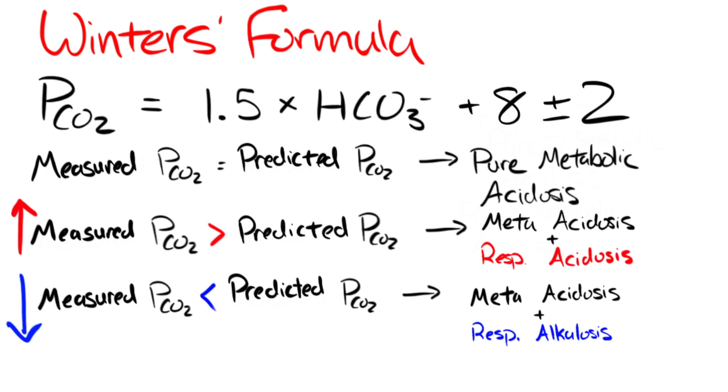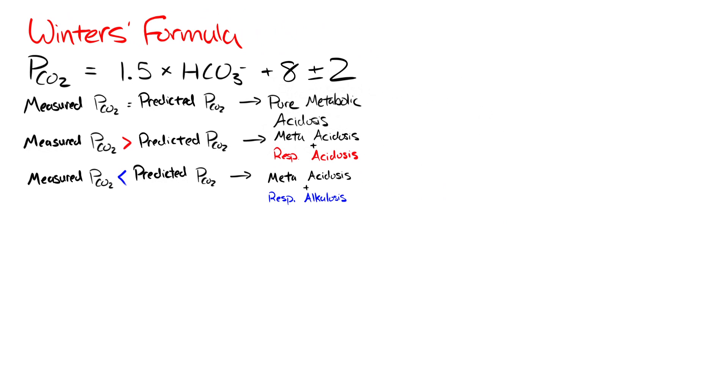A low PCO2 is consistent with a respiratory alkalosis. If you're getting rid of too much PCO2, which is acidic, you'll create an alkalotic environment. So, let's work on some practice problems using Winter's formula.